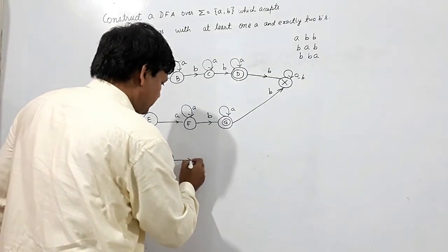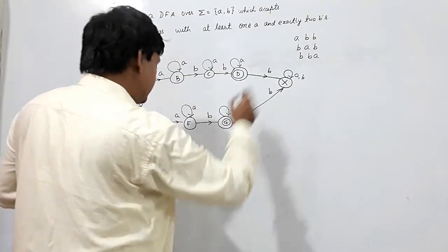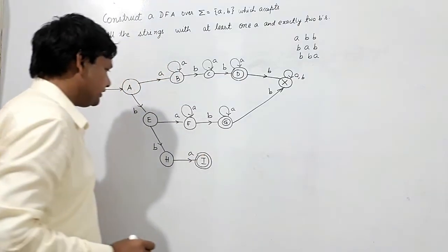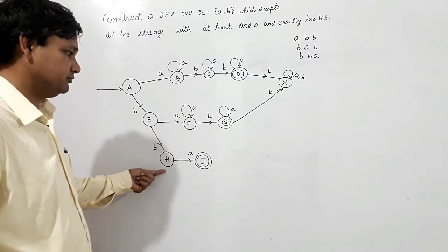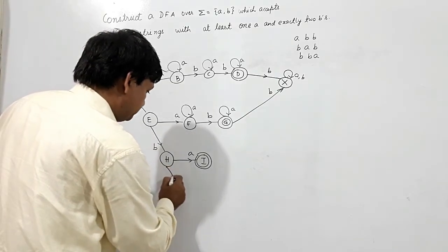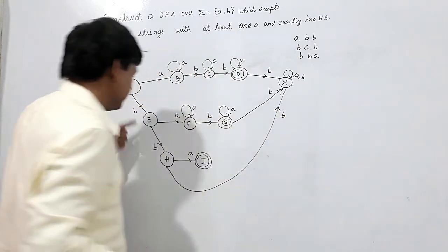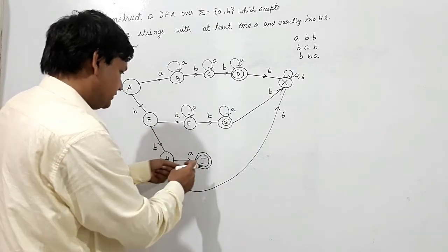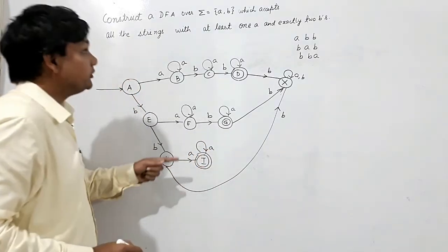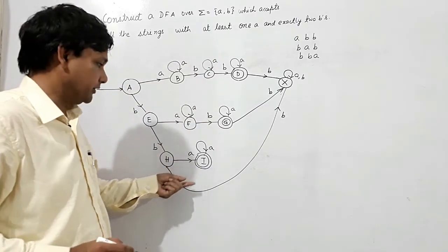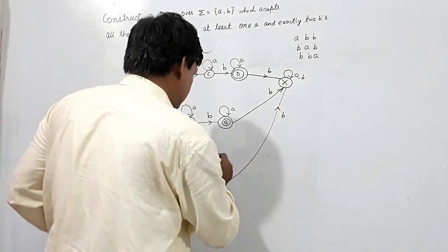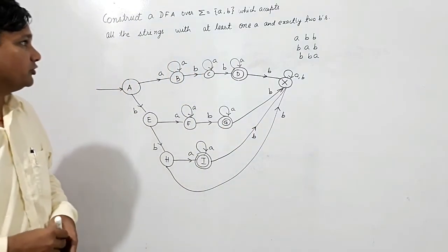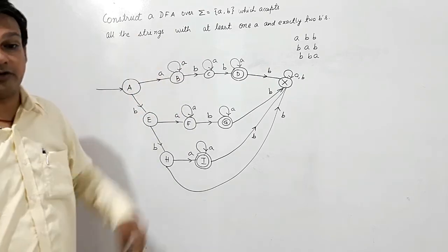Consider B, B, A — this should also be accepted, so if this state is I, it should be the accepting state. What will happen here — A is fine, B is done. If B comes at this point it should go to a reject state because it would exceed the number of B's to more than two. If A is here and B is here, now A comes — it will be accepted because it contains at least one A. But if B comes, it goes to the reject state. So this is the required DFA for this language.